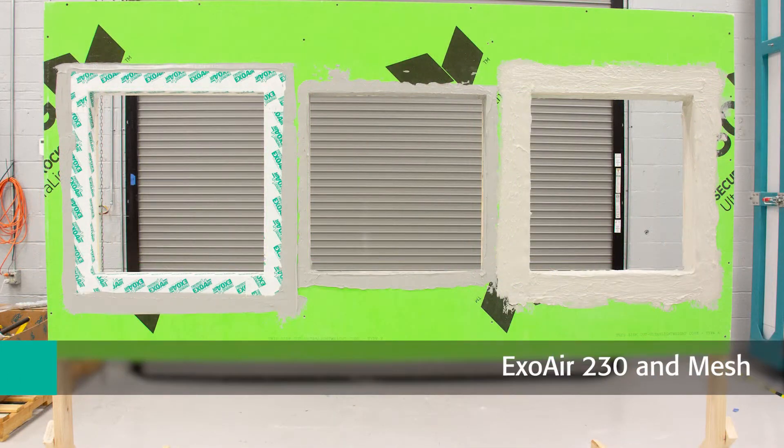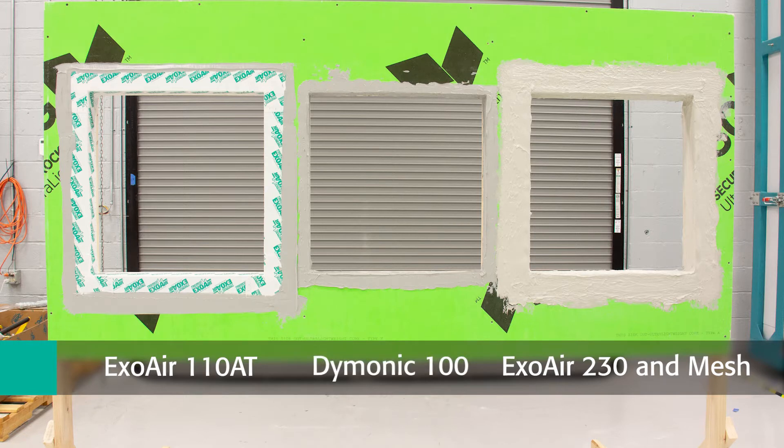The use of ExoAir 230 Fluid Air Barrier Membrane and Mesh, the sheet-applied or peel-and-stick air barrier ExoAir 110AT, or lastly, the trowelable urethane sealant Deimonic 100.